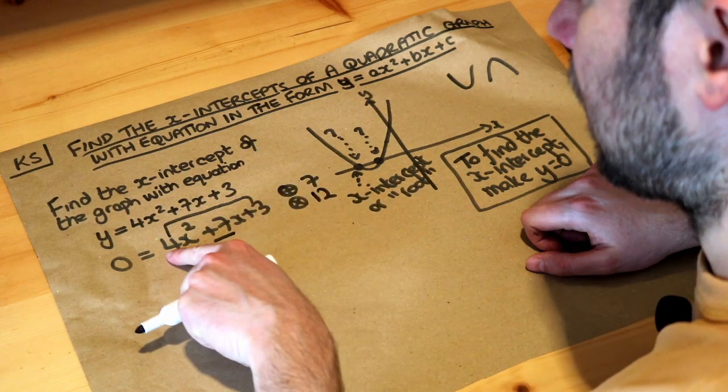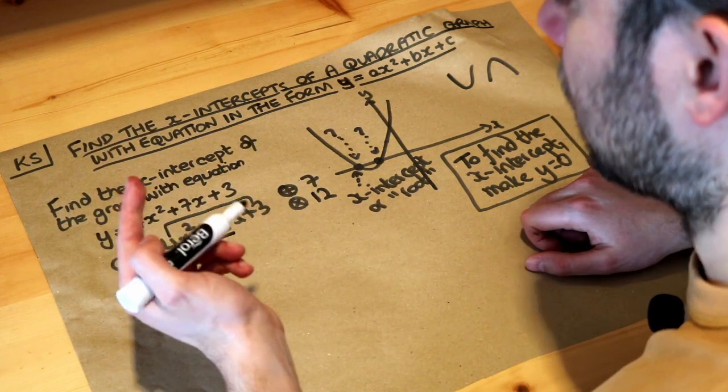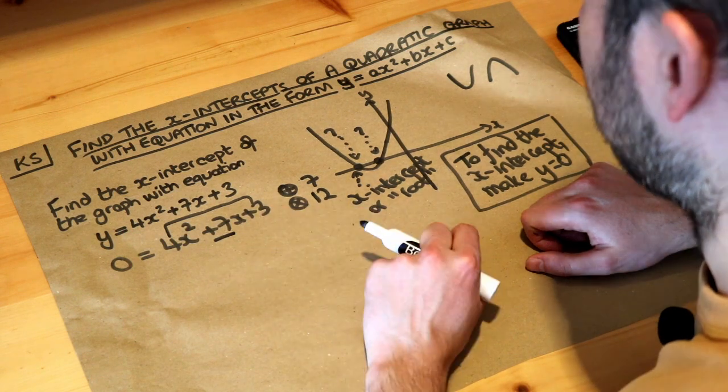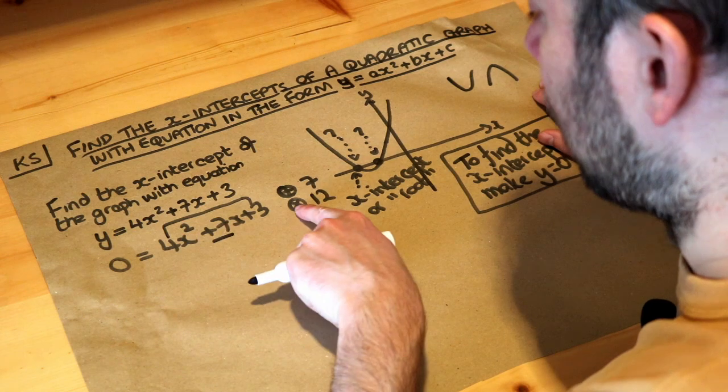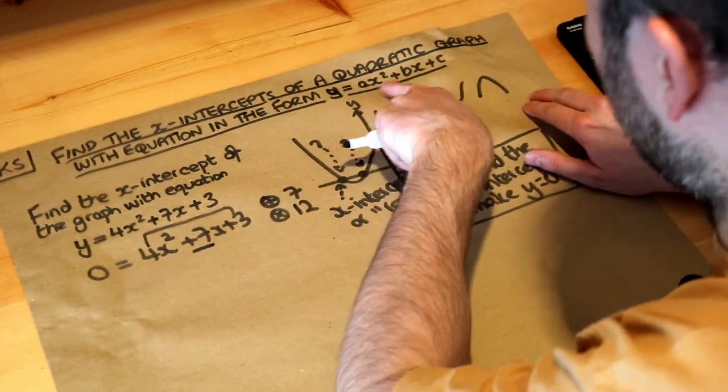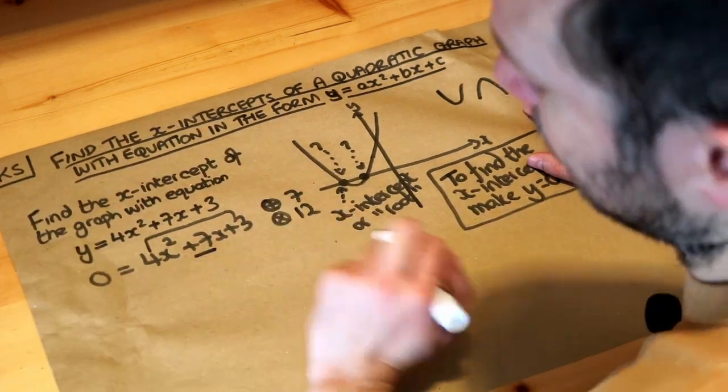A lot of students get this step wrong. They forget to times the 4 and the 3 and they just find two numbers that times to give that last number 3. This is sometimes called the AC method because we're finding two numbers that times to give the first times the last, the A times the C AC method, hence why it's named.